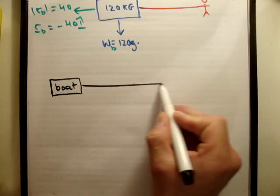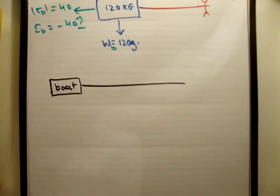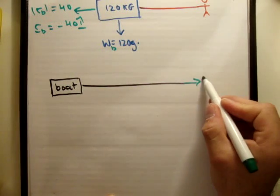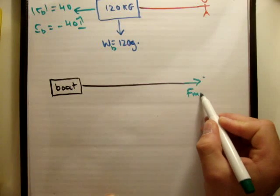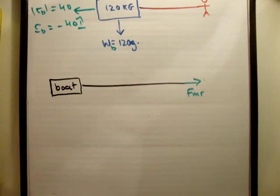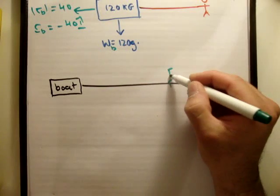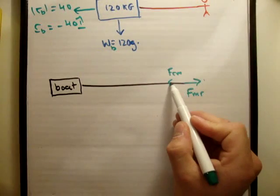What forces have we on the rope? The first force we have is the force of the man on the rope, and every action has an equal but opposite reaction, so we have the force of the rope on the man in that direction.